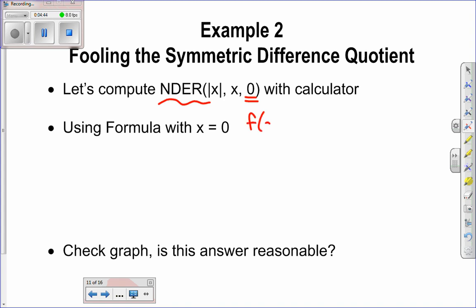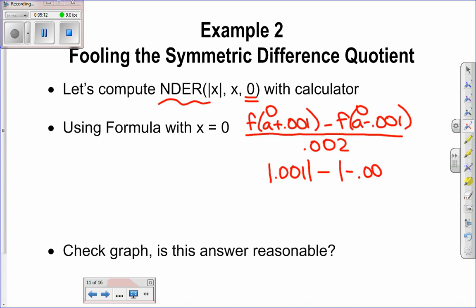Remember the symmetric difference is a plus 0.001 minus the function a minus 0.001. I'm just picking a point a little bit above and a little bit below my point of interest, divided by 0.002. So now it's absolute value when a has a value of 0. So I'm going to have the absolute value of 0.001, subtracting the absolute value of negative 0.001, and it's all divided by 0.002.